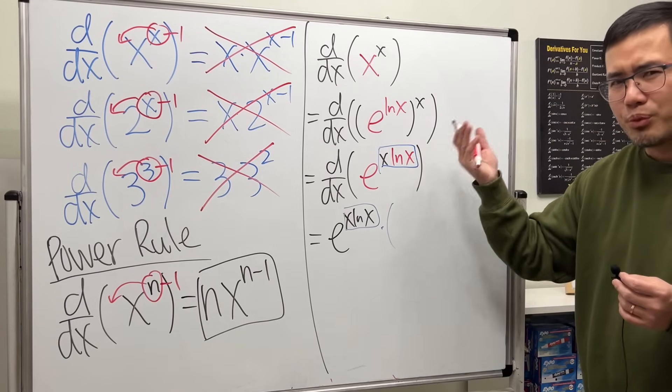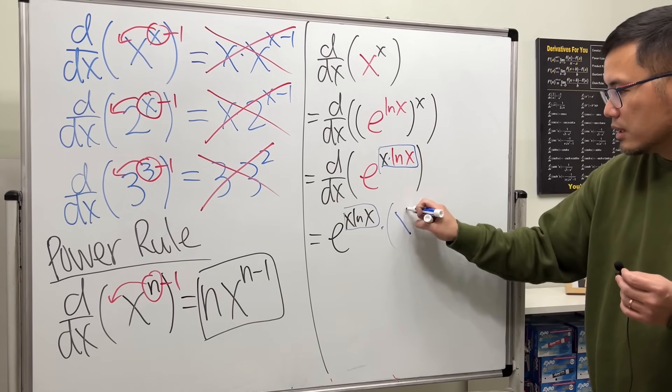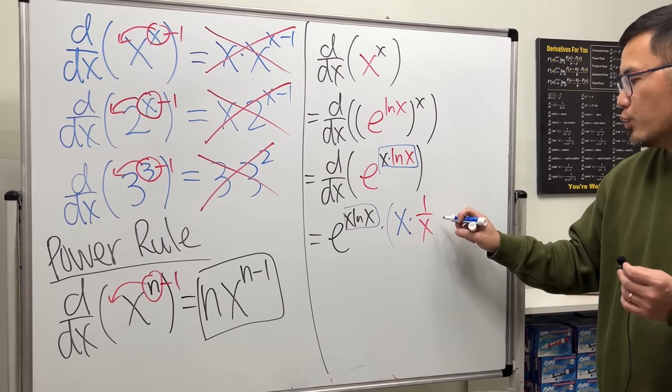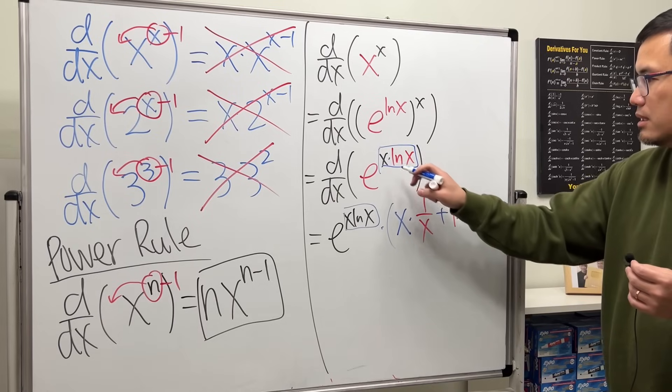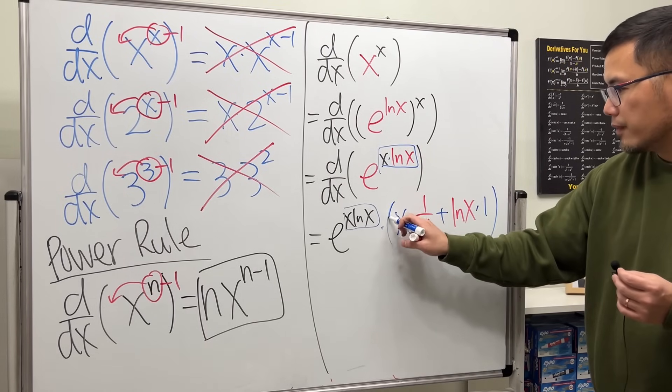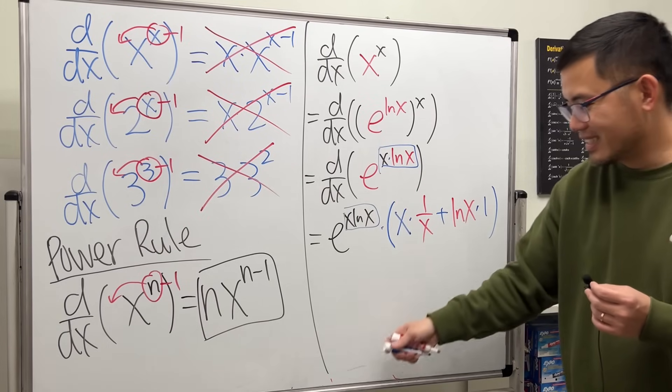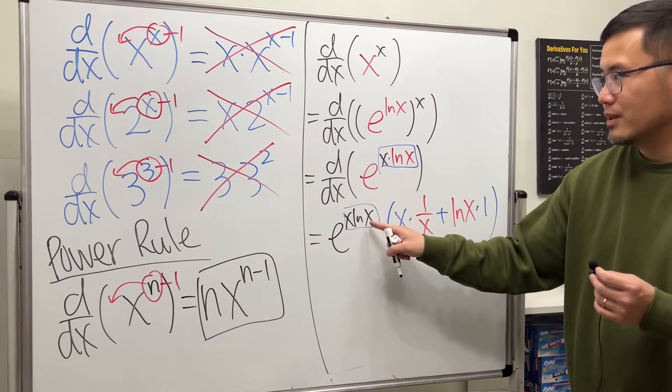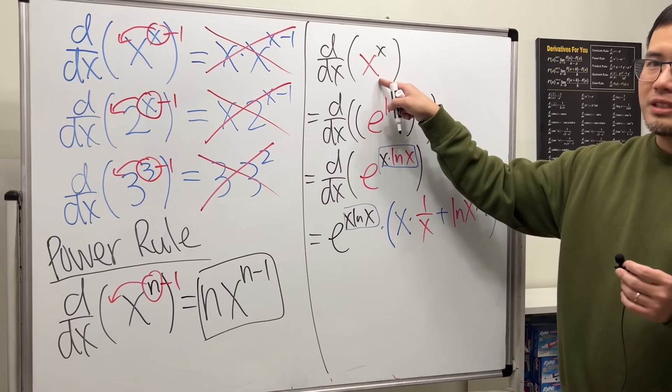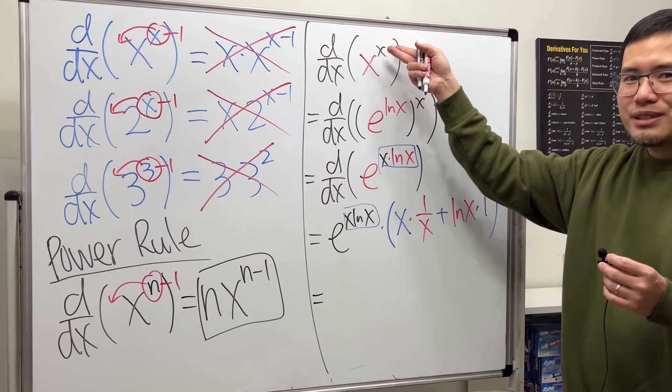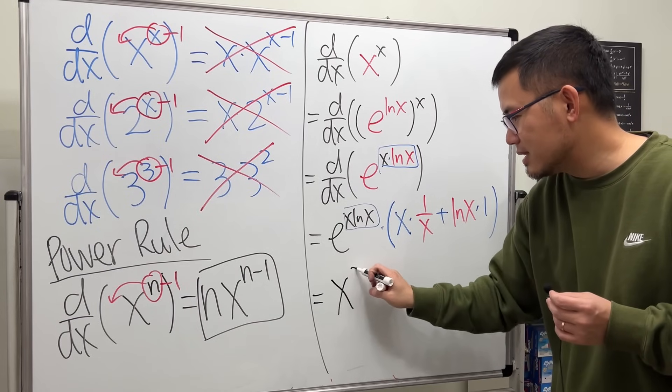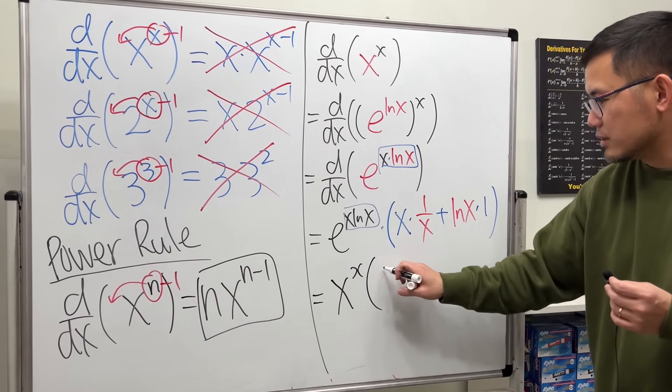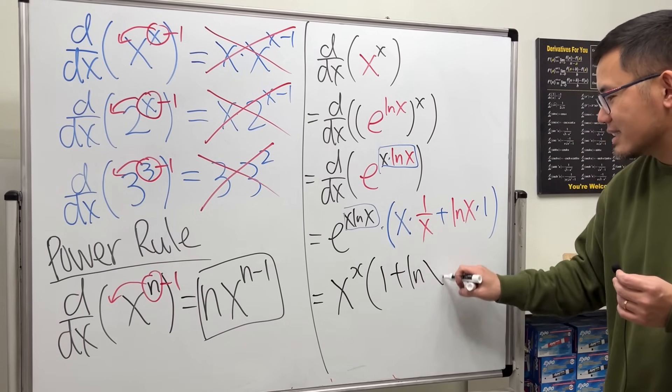And the derivative is x times that, so product rule. Keep the first function, times the derivative of the second. Derivative of the second is 1 over x. And then we add the second function, which is lnx, times the derivative of the first, which is 1. So that's the work. Base e to that power. And then finally, what's e to the x lnx? Isn't it just this? Yes. And in fact, when we have x to x power, this thing repeats. But we have this extra thing. Right here, x times 1 over x is just 1, and then plus lnx. So this is how you legitimately take the derivative of x to the x power.